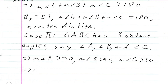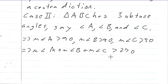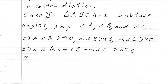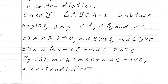This implies that the measure of angle A plus the measure of angle B plus the measure of angle C is bigger than 270, since all of them are bigger than 90. But by the triangle sum theorem, we know the measure of angle A plus the measure of angle B plus the measure of angle C is equal to 180. We can't have the sum be both bigger than 270 and equal to 180. This is a contradiction.